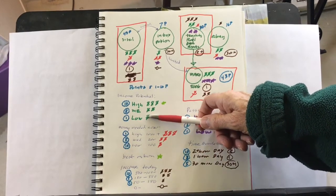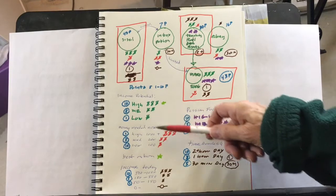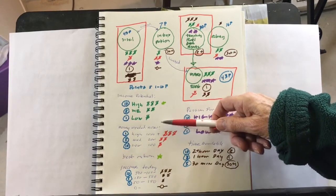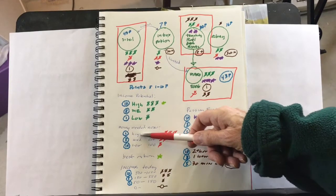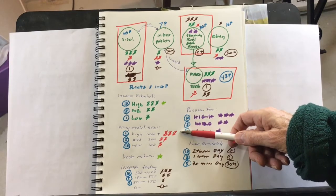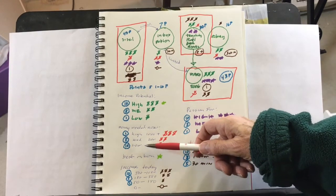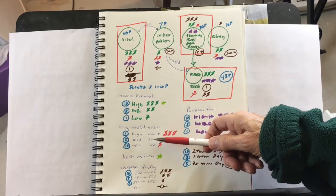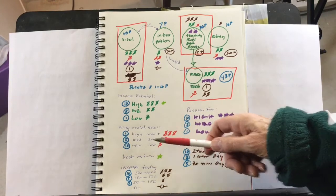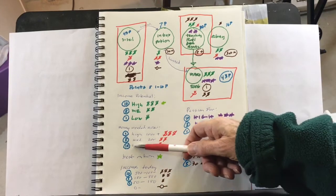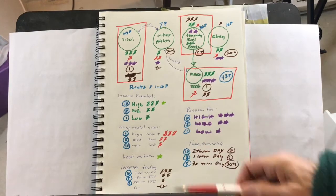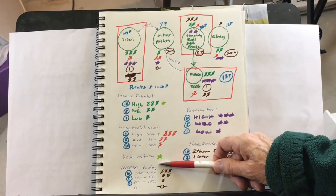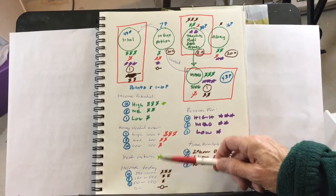So, here I have three dollar signs means high income potential. Two means medium. One means low. And then, here is money needed now. So, if we need over a thousand dollars now, it gets three of these red dollar signs.